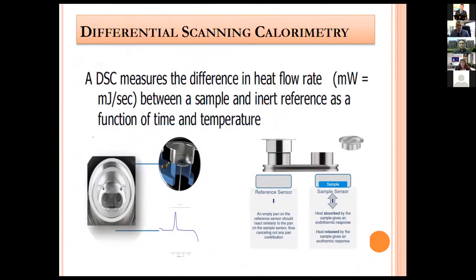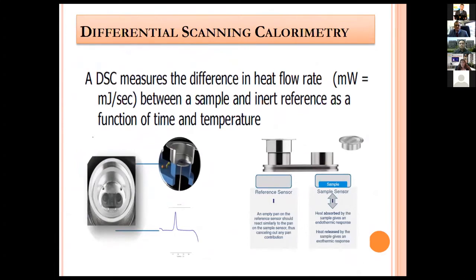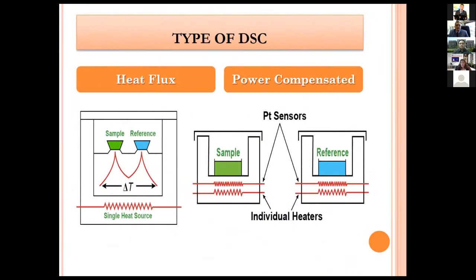Differential Scanning Calorimetry (DSC) measures the difference in heat flow between a sample and an inert reference as a function of time and temperature. The two types of DSC are heat flux and power compensated.